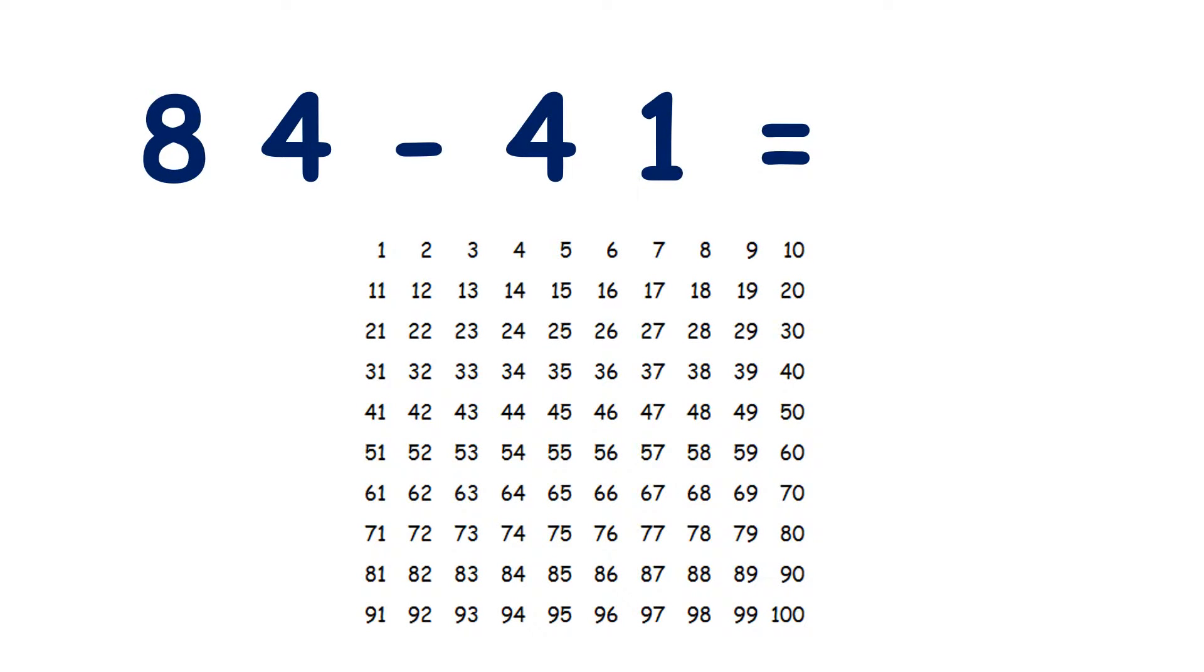We can subtract two digit numbers using a hundred square. So we have 84 minus 41.